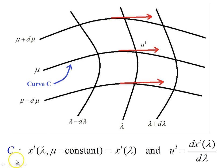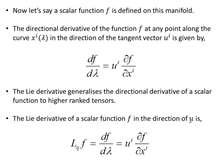Pick a curve here and we can parameterize it in terms of lambda, and set mu equal to constant. So mu is constant along here, and it's lambda that varies as we go across. The tangent vector will be dx^i_lambda / d lambda. That gives us the tangent vector at any point.